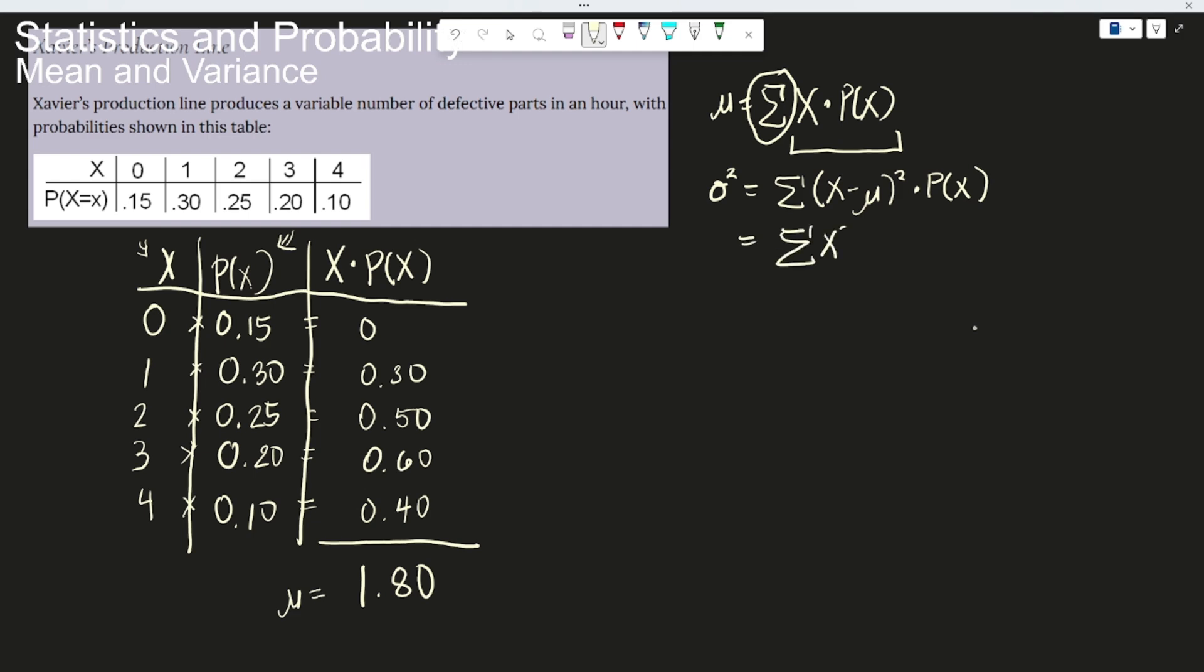Another formula would be this. Summation of x squared times p of x. So we sum first the multiplication of them. And then after we add, you subtract the square of the mu or the expected value. So let's try to use this first one. Okay? So let's do the one-step method.